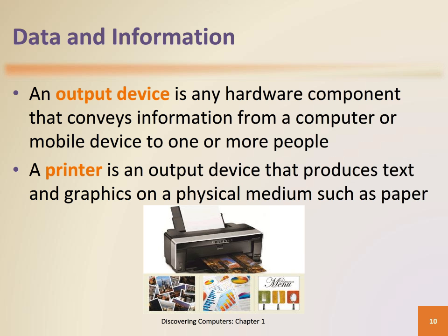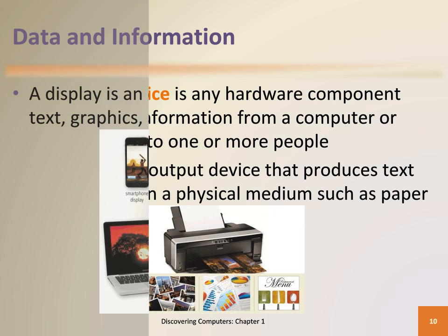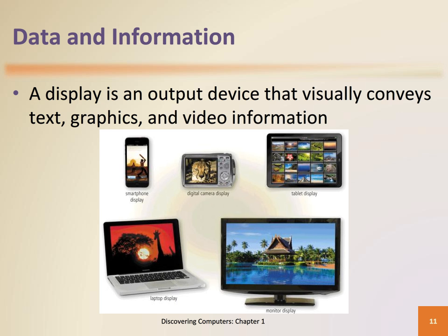An output device is any hardware component that can visually convey text, graphics, and video information to one or more people. A printer is an output device that produces text and graphics on a physical medium — this output is called a hard copy. A display is an output device that visually conveys text, graphics, and video information; the information shown on a display device is known as soft copy.